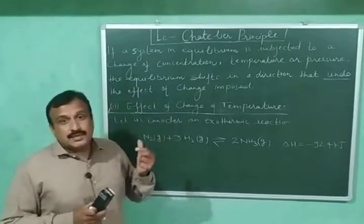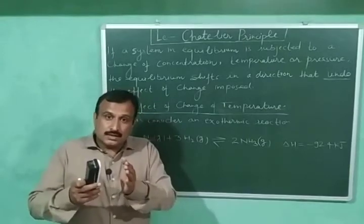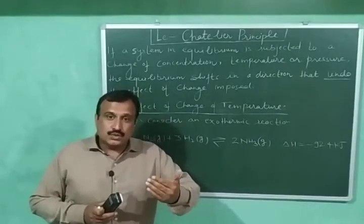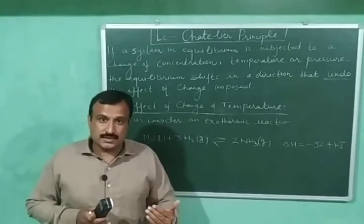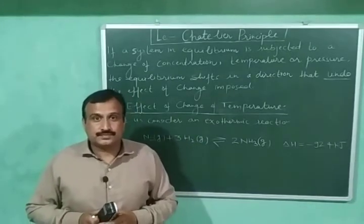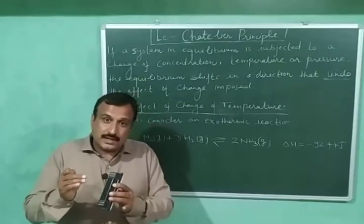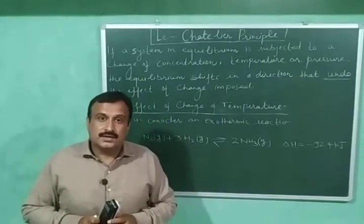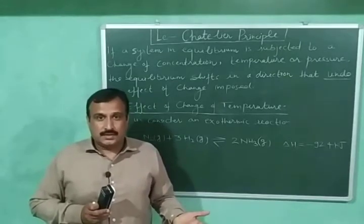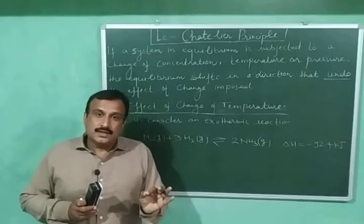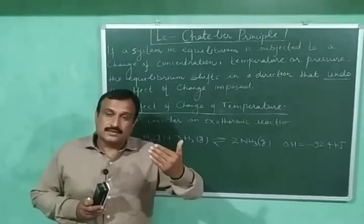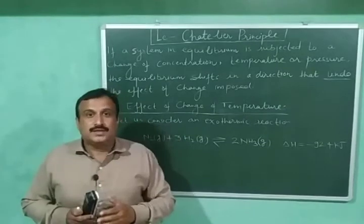If we decrease the temperature of the system, heat is withdrawn from the system. To undo or reverse the effect of this decreased temperature, heat must be evolved in the system and the temperature should increase again. This means the equilibrium will shift in the direction in which heat is evolved. Since exothermic reactions proceed with evolution of heat, decrease in temperature will shift the equilibrium in the direction of the exothermic reaction. Exothermic reactions are favored by decrease in temperature.